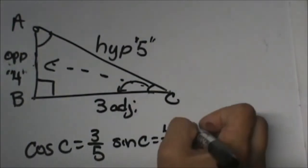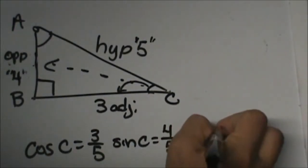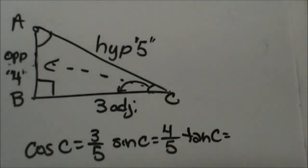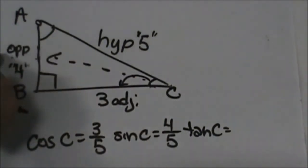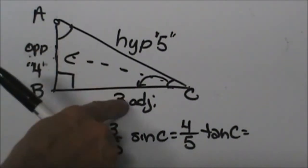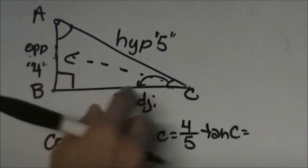Now let's look at the tangent of C. The tangent of C would be opposite over adjacent. So 4 over 3.